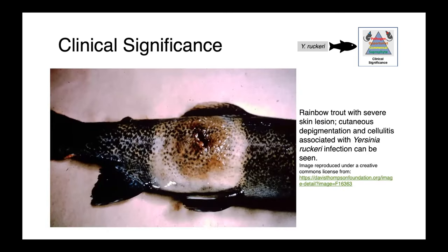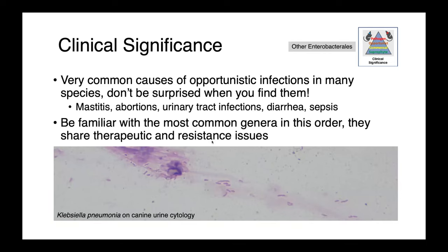In this image you can see a rainbow trout with severe skin lesions — cutaneous depigmentation and a really nasty cellulitis associated with Yersinia ruckeri. Today, we've by no means discussed the entire breadth of Enterobacteriales; there are many other organisms which cause a wide variety of opportunistic infections in many species. Don't be surprised when you find them from mastitis, abortions, UTIs, diarrhea, sepsis. Here you can see Klebsiella pneumoniae on urine cytology from a dog — a common cause of urinary tract infections that clinically is going to be very similar to a UTI caused by E. coli.